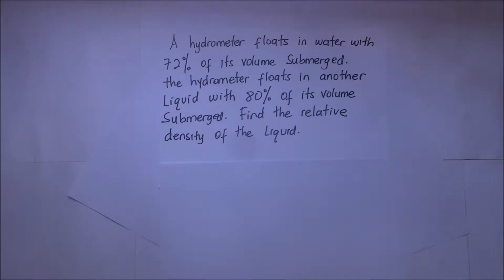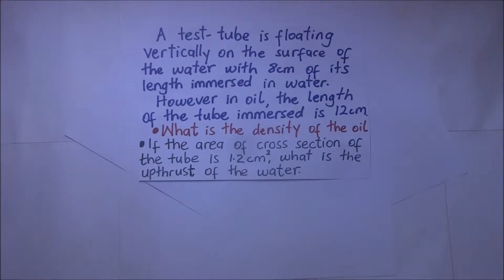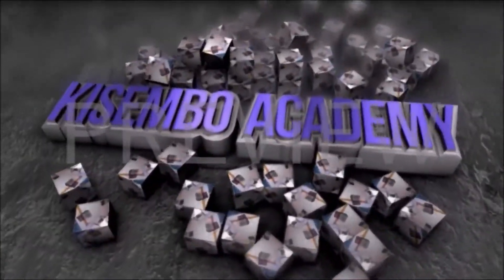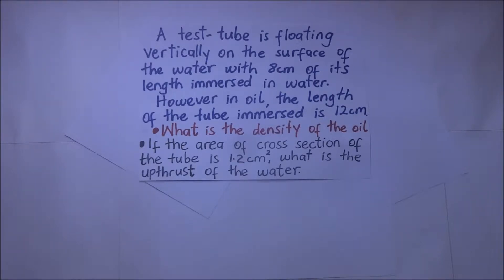In today's session, we shall answer these questions. The test tube is floating vertically on the surface of the water with 8 centimeters of its length immersed in water. However, in oil, the length of the tube immersed is 12 centimeters. What is the density of the oil, and if the area of cross-section of the tube is 1.2 centimeters squared, what is the upthrust of the water?